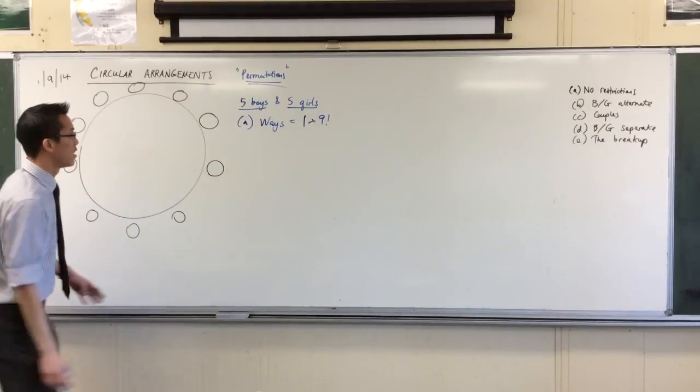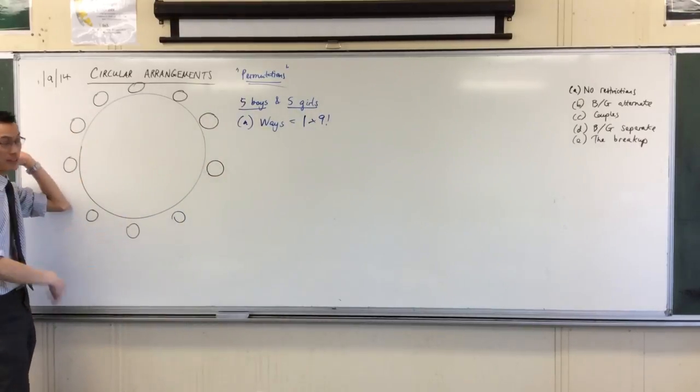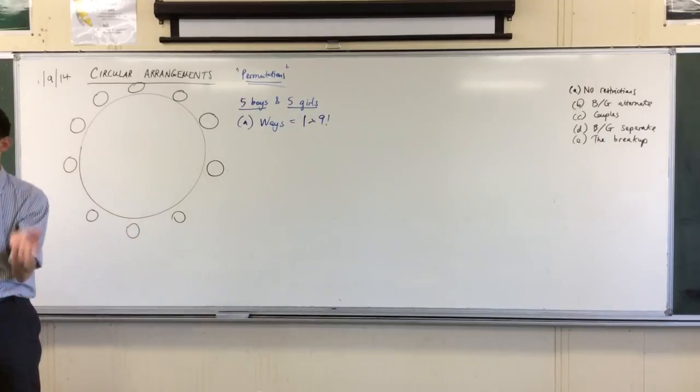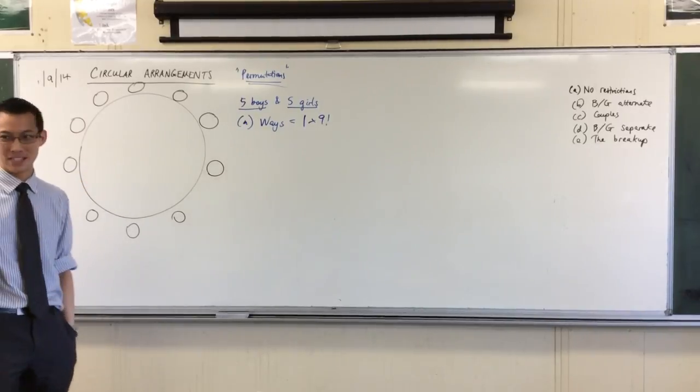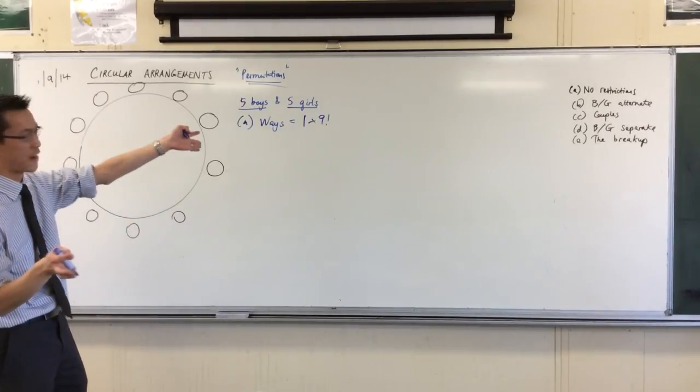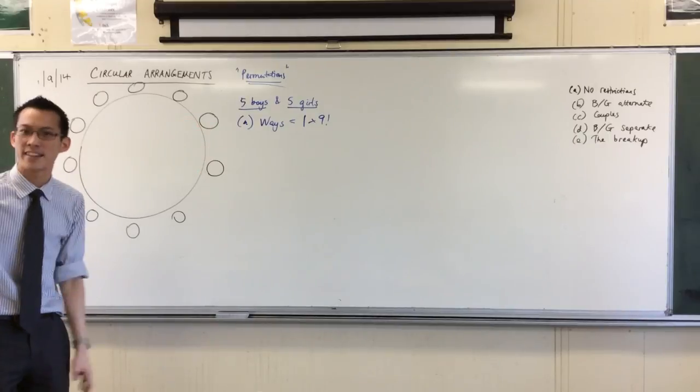Or alternatively, the first way you thought about it, you have ten spots, ten things to fill in with, ten factorial, but you've overcounted because you can rotate a whole bunch of them and they're the same. But you get the same answer either way. I'm not particularly interested in what nine factorial is equal to, more than the fact that we built it by getting nine factorial. Your calculator can do the rest.